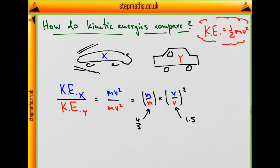This car x is a sports car, it's lighter but goes faster. We know the exact ratios, and if we plug the numbers in we get this, which equals 1.8.